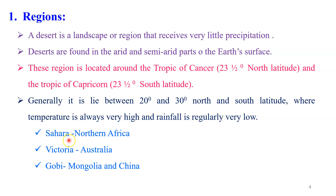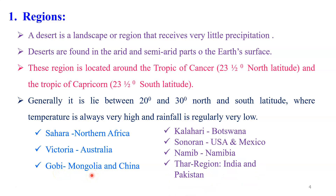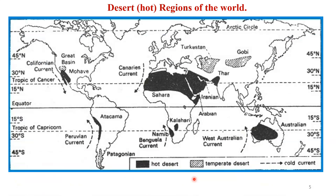The second desert is located in North America. We have the Victoria Desert, located in Australia. We have the Gobi Desert, located in Mongolia and some part of China. We have the Kalahari, Sonoran, and Namib deserts. The Thar Desert is also located in India and some part of Pakistan.